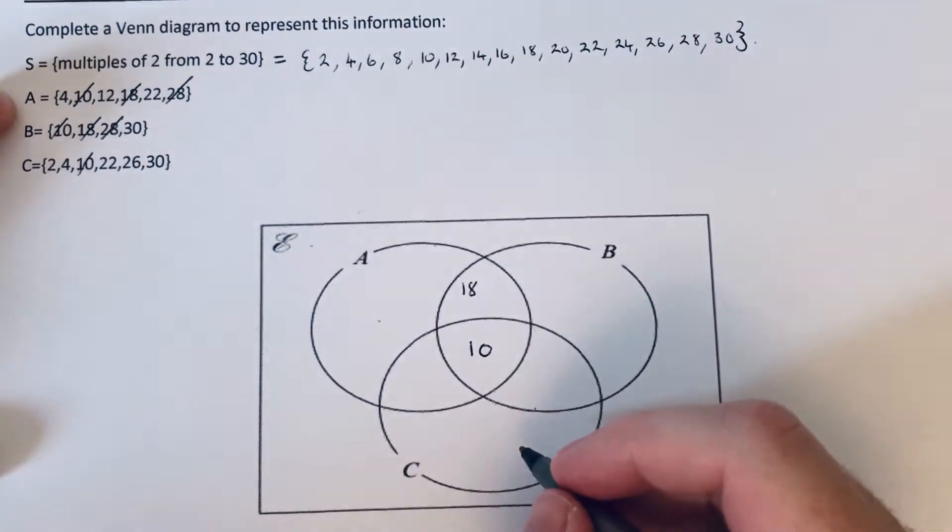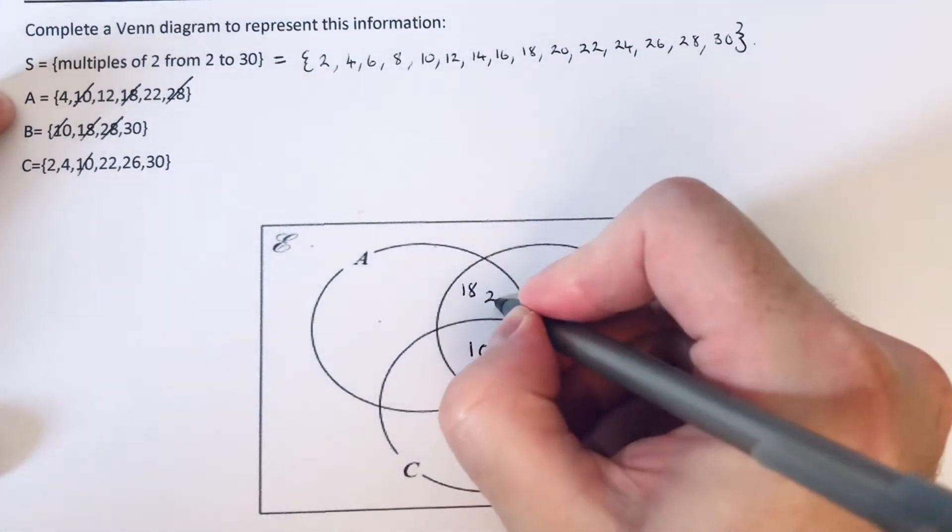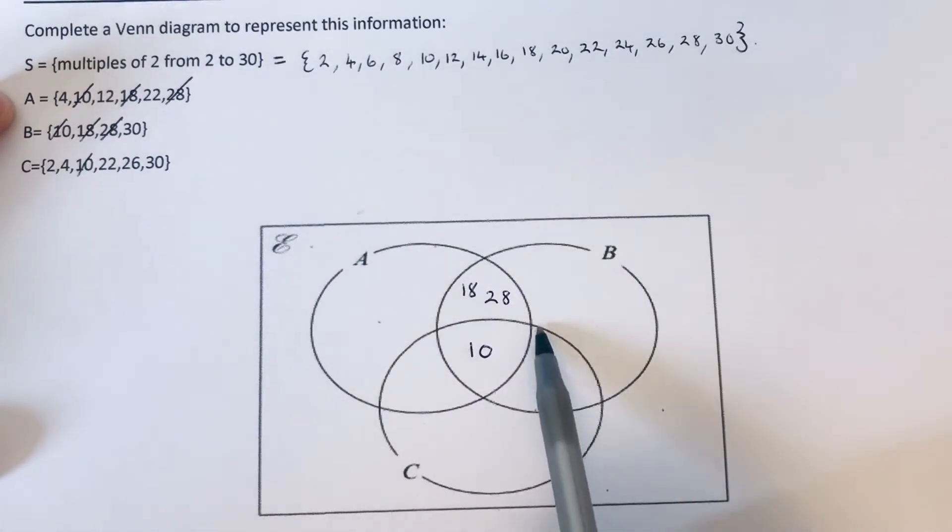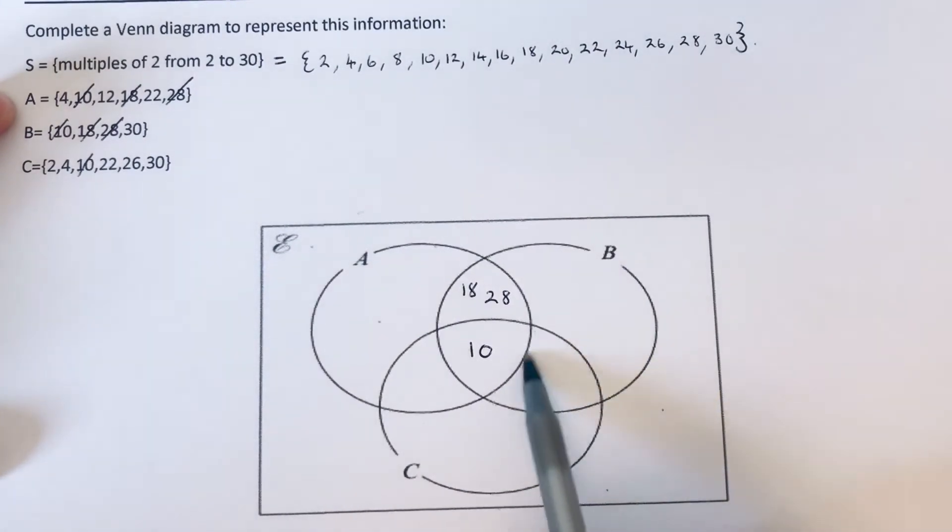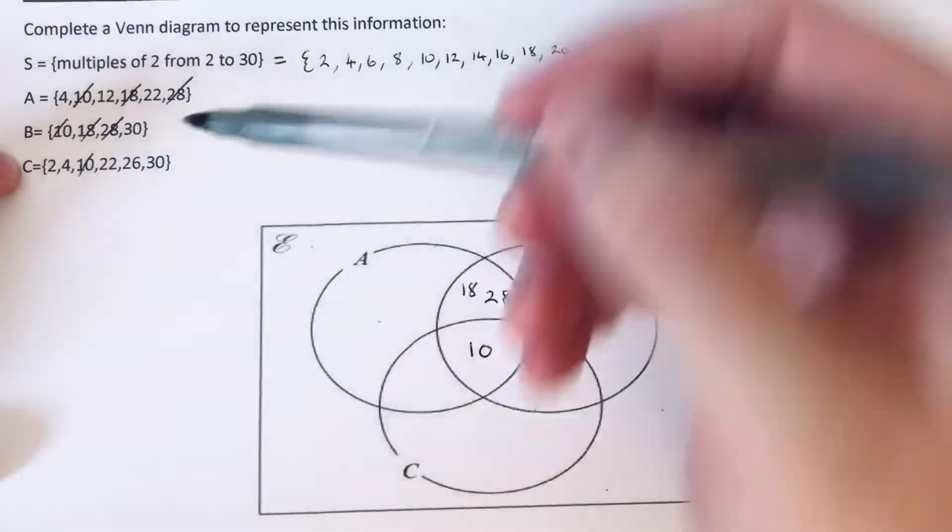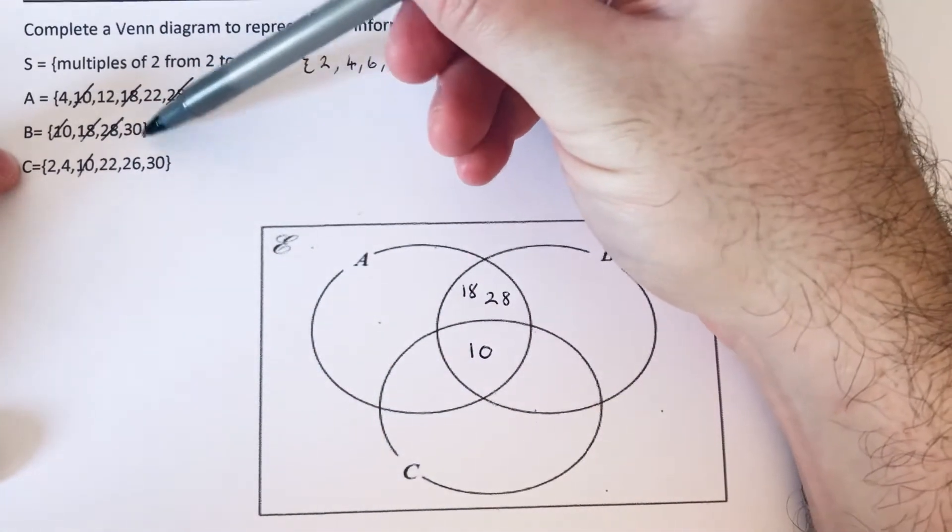So let's do this bit here next. These are numbers which are in B and C but not A. So we're looking at B and C. The only number in B and C is 30, so we put this one here.